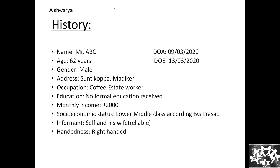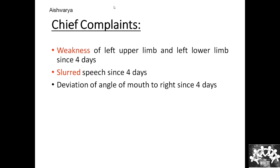The history was given by himself and his wife, which is reliable. He is a right-handed individual. He presents with chief complaints of weakness of left upper limb and left lower limb since 4 days, slurred speech since 4 days, and deviation of angle of mouth to the right since 4 days.